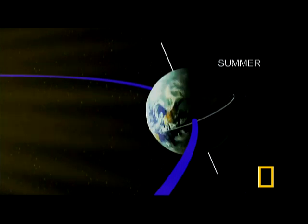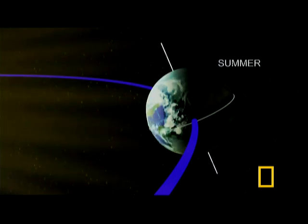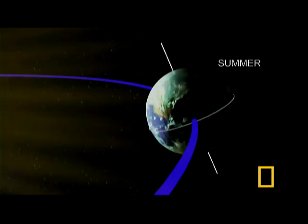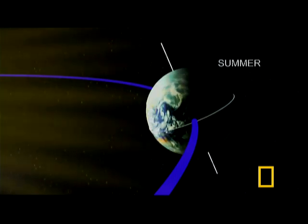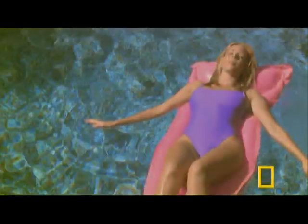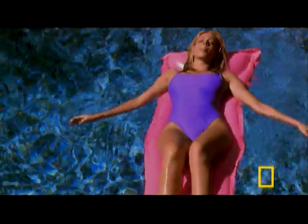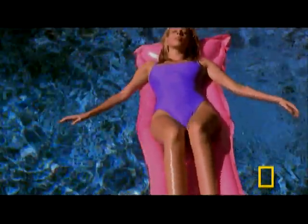Because of the planet's tilt, during the summer sunlight hits the Earth at a more direct angle, so the warming effect of the sunlight is more intense. Plus, the Sun is at its highest point in the sky, so there are more hours of sunlight to provide heat.